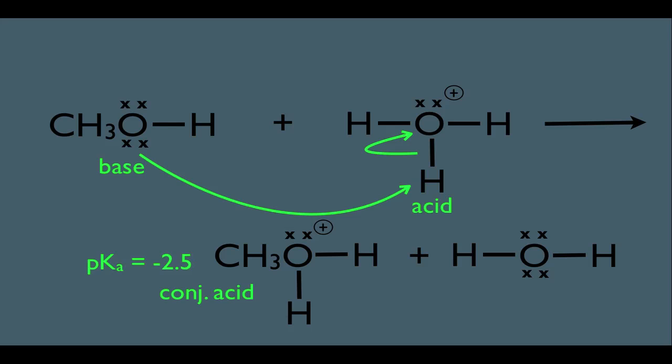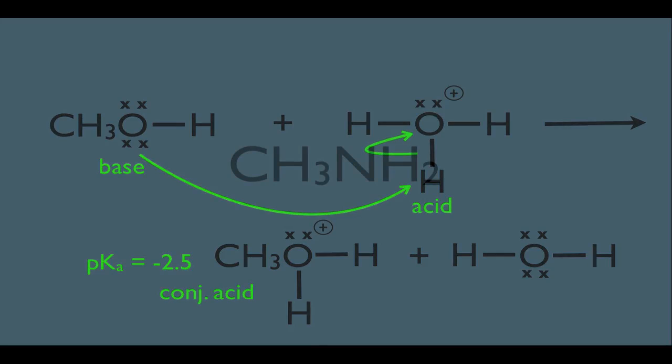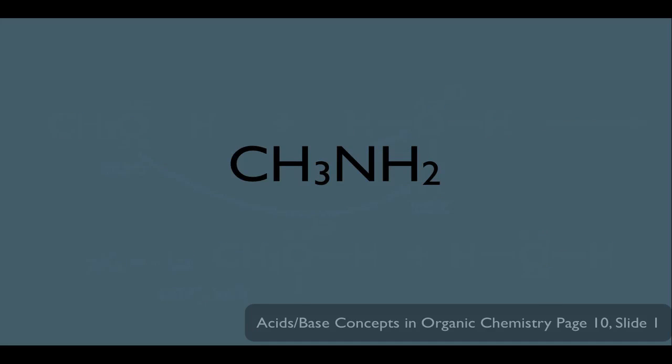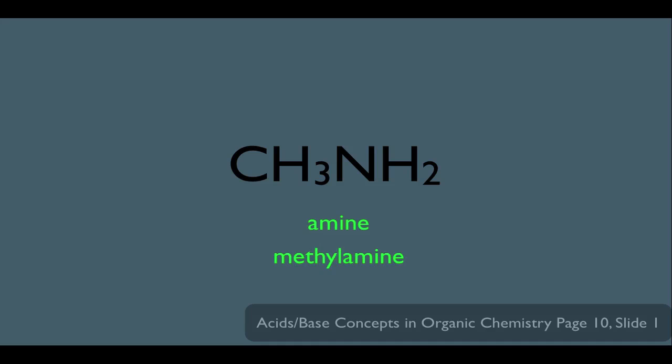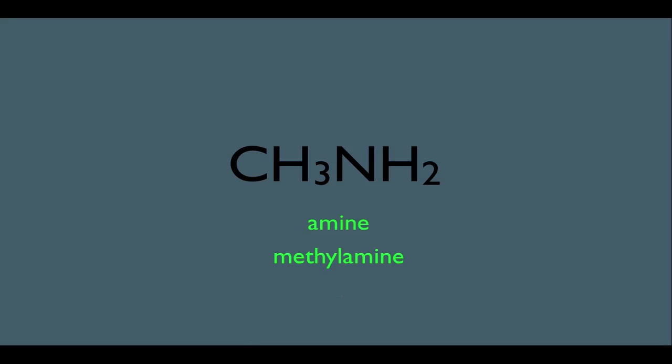Now let's look at amines — these can also act as acids and bases. All amines have an NH₂ or sometimes an NR₂ functional group. This particular amine is called methyl amine. Amines have a pKa of around 40, which means they are extremely weak acids; in fact, amines behave more so as bases than as acids, but they can play both roles.